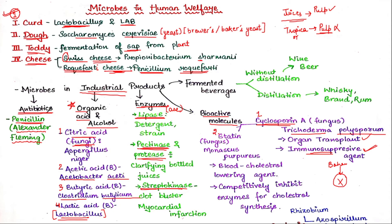Next is Statin. We take Statin from the fungus Monascus purpureus. It is a blood cholesterol-lowering agent. Unlike Streptokinase, Statin works by inhibiting enzymes so that cholesterol synthesis does not occur.